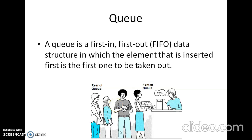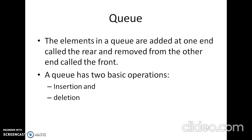A queue is a linear data structure which is first-in-first-out, in which the element that is inserted first is the first one to be taken out. The elements in a queue are added at one end called the rear end, and removed from the other end called the front. It has two basic operations: insertion and deletion. Like a stack, a queue can be implemented using either an array or a linked list. Every queue has a front and rear variable that point to the position from where deletion and insertion can be done respectively. In a queue we have two pointers, front and rear, but in a stack we have only one pointer called top.